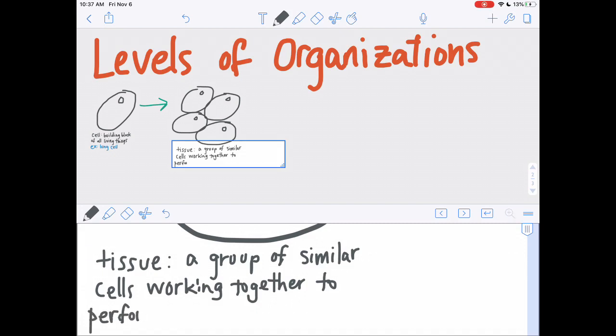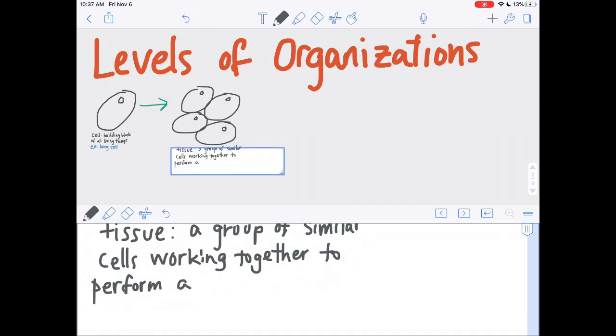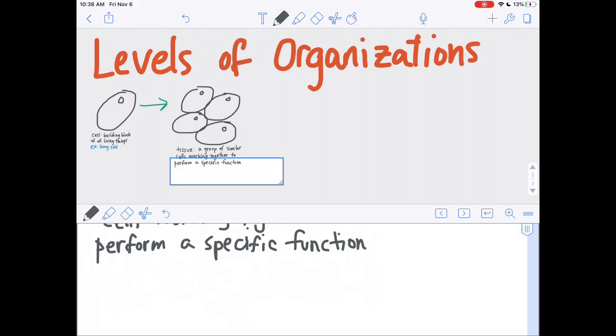So in the lungs you have all kinds of tissues. You've got some tissue where their job is to absorb oxygen and release carbon dioxide. You've got tissue whose job is to provide protection. You've got tissue that has a job to provide structure and keep your trachea open. So you've got lots of different types of tissue in your lungs and they're all made of cells. So an example we're going to say is lung tissue.